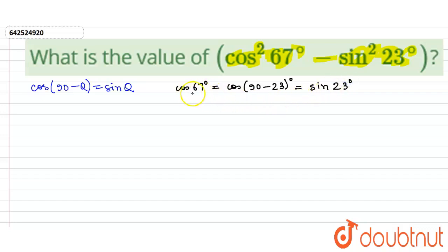Now let's write this as an equation: cos 67° equals sin 23°.